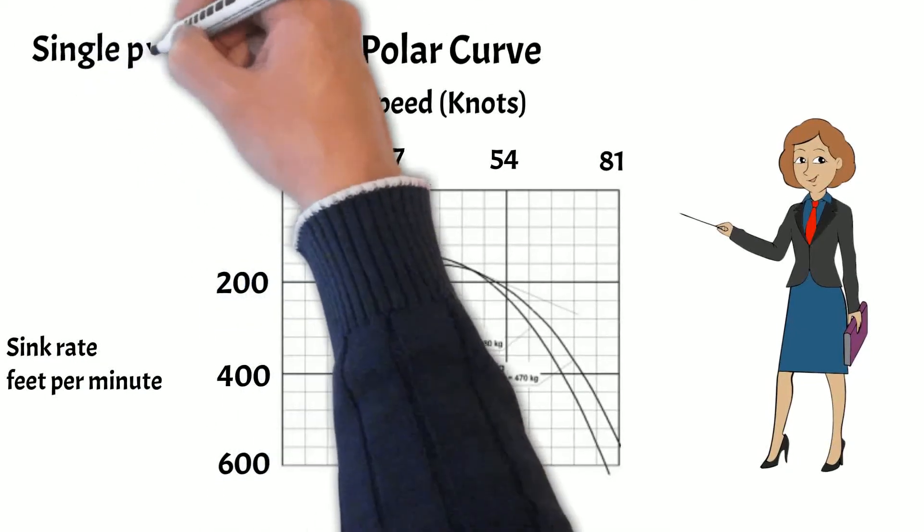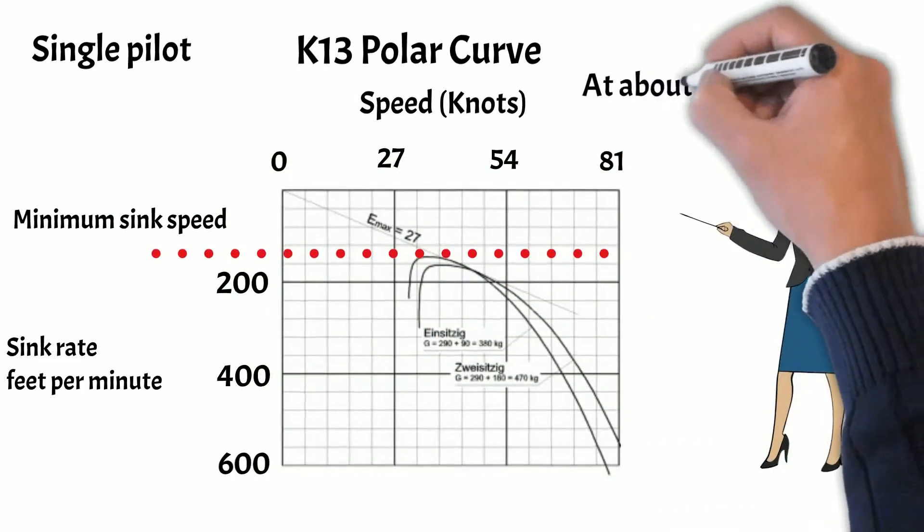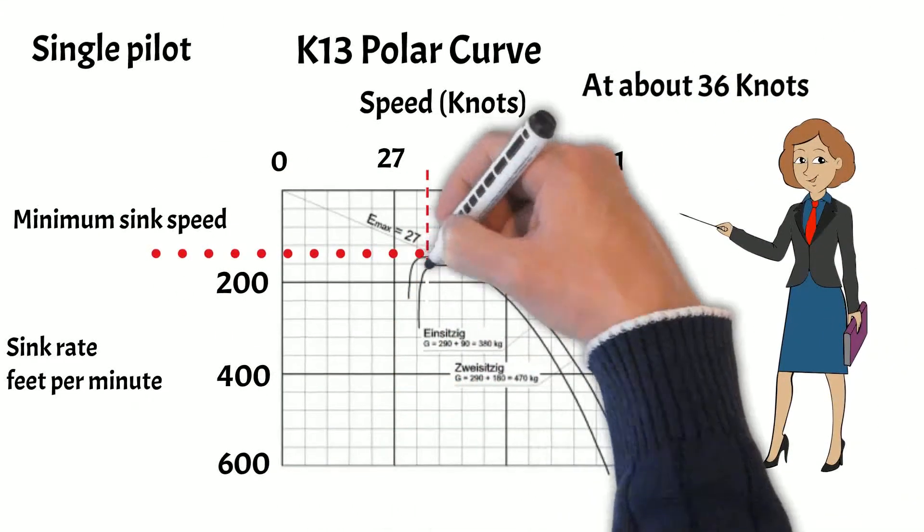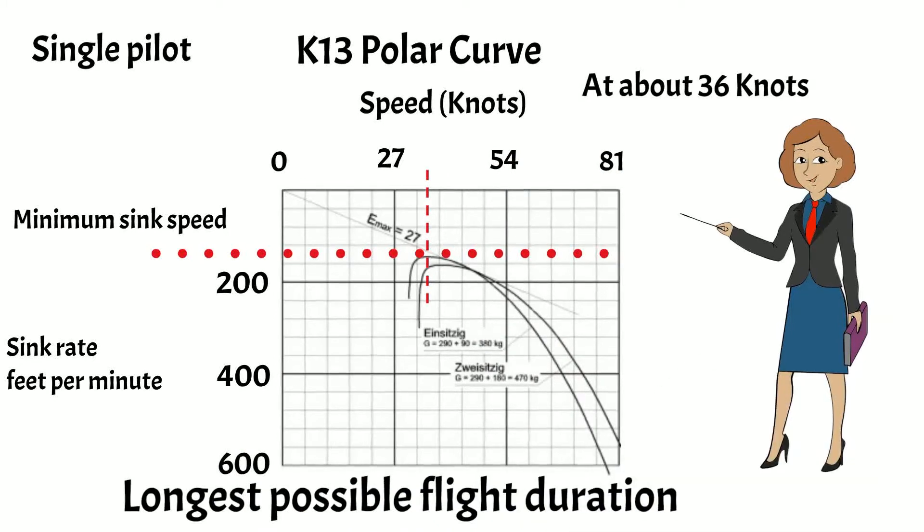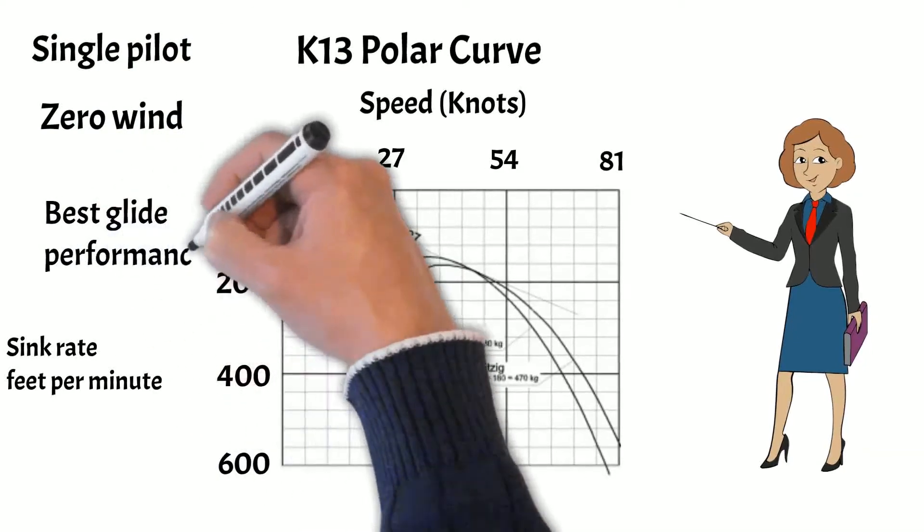For a single pilot, minimum sink is here at about 36 knots. At this speed we achieve the longest flight time for a single pilot in zero wind conditions.